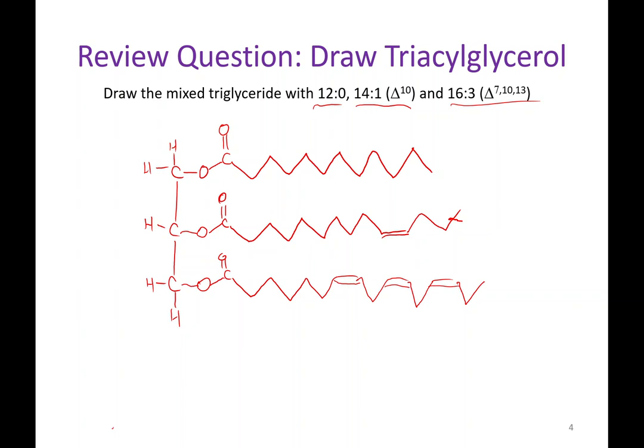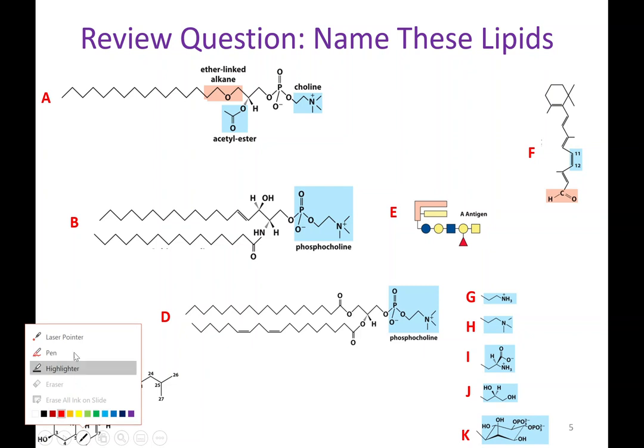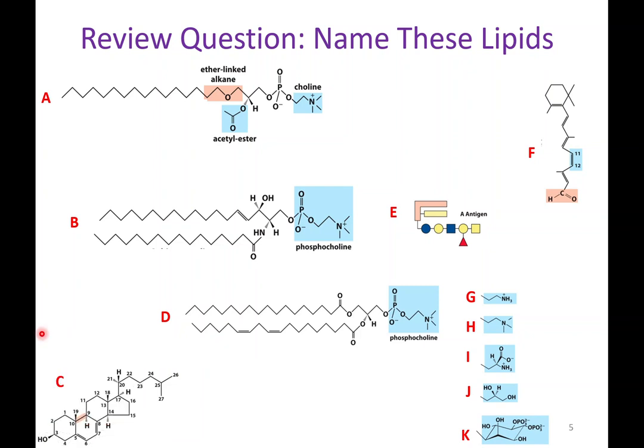Regarding exam format: on a paper exam you could be asked to draw one of these triglycerides. For an online exam, you might be given the structure and asked to name all three of the fatty acids in it. The last review question asks you to name several lipids — it's a good point to pause and try naming them yourself.